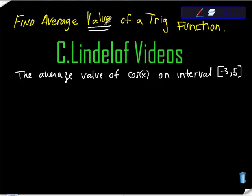This is different than average rate of change. Remember that average rate of change goes to derivatives. Average value goes to anti-derivatives, goes to area. So here's the question: what's the average value of cosine of x on the interval [-3, 5]?